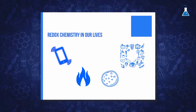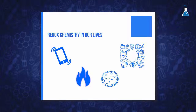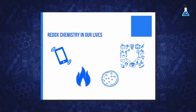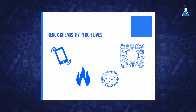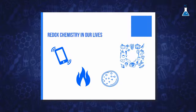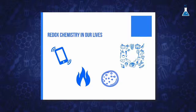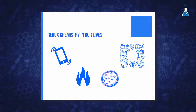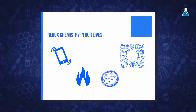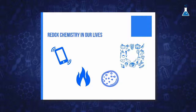Redox reactions occur in the battery of our cell phones, in combustion reactions such as burning gasoline or wood, in rusting metals, and in biological processes such as cells converting sugar into energy in the form of ATP to power our metabolism and muscles.